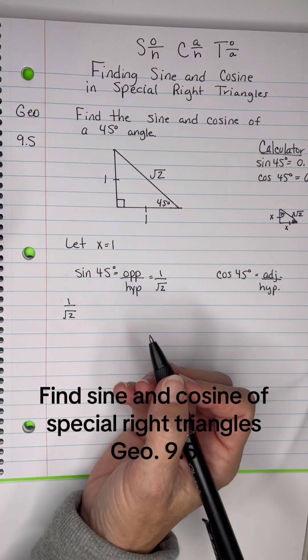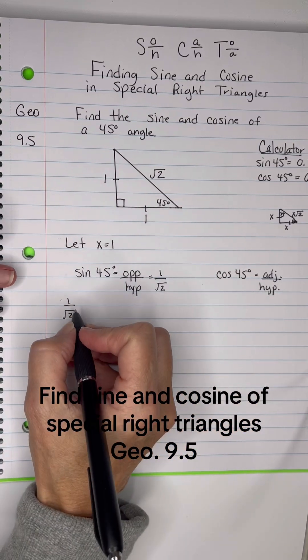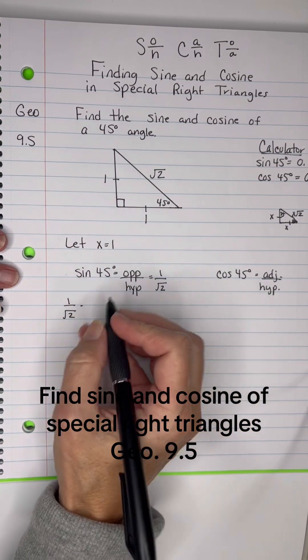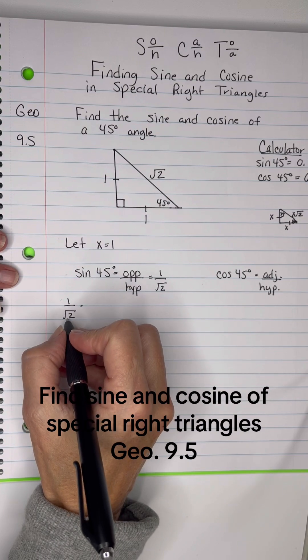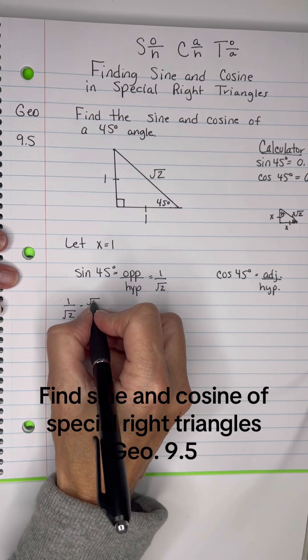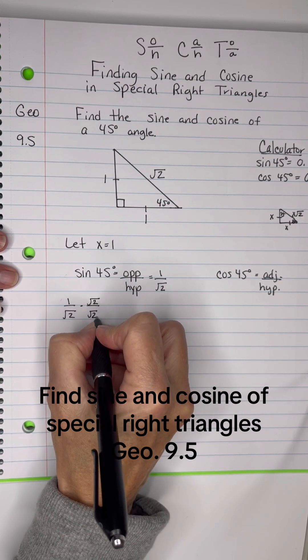Now we're not allowed, and I could put that in the calculator, but let's go ahead and review some old math here. We're not allowed to have a radical in the denominator, so we're going to rationalize the denominator and multiply by the square root of 2 over the square root of 2.